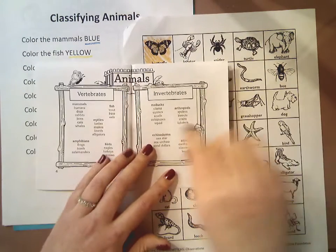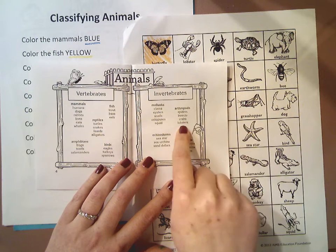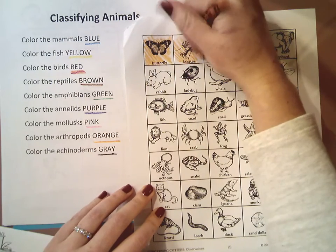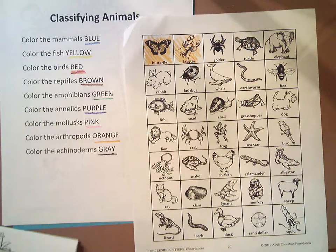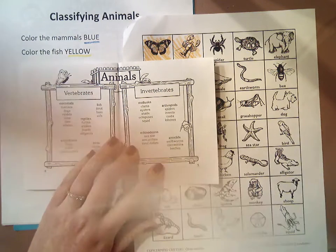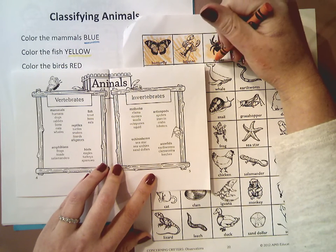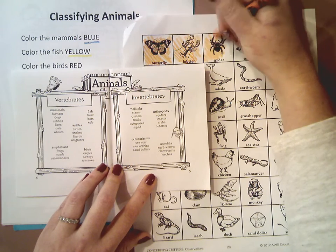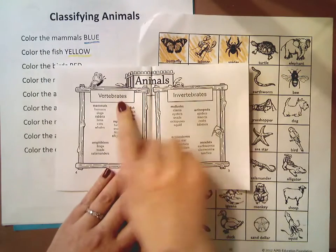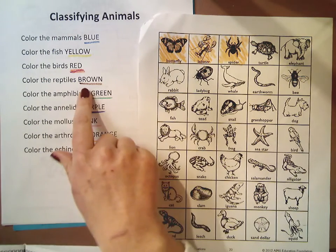Lobster — I also know it's an invertebrate. When I look through the list and find lobster, it's another arthropod, so I'm going to color it orange. Let's do one more together: a spider. A spider is another arthropod. And one more — how about a turtle? A turtle has a backbone, so it's a vertebrate. I know a turtle is a reptile, and a reptile is brown, so I'm going to color the turtle brown.